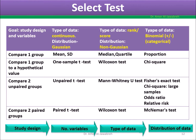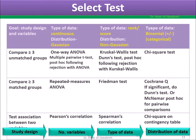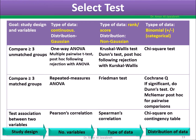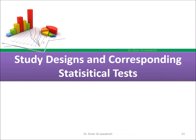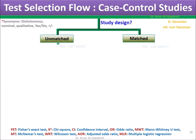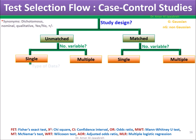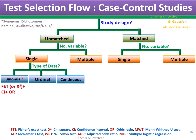Selecting the appropriate statistical test is based on the four criteria: study design, number of variables, type of data, and distribution of data. The test selection flow for case control studies follows these same four criteria.